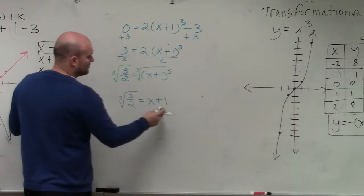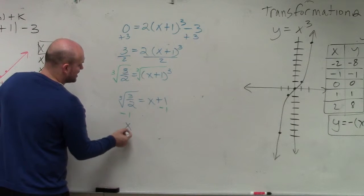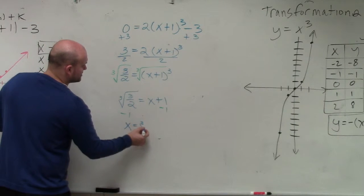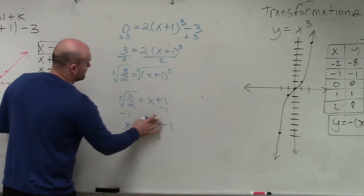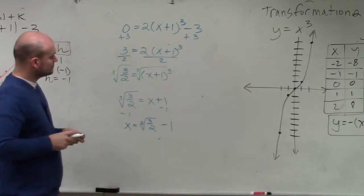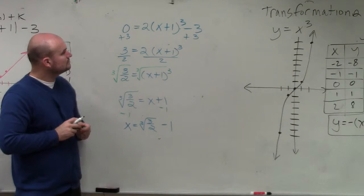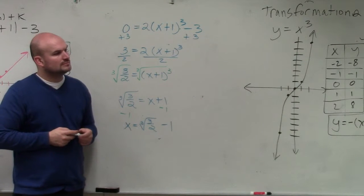Then I just got to get rid of the 1. So my solution is x equals the cube root of 3 halves minus 1. OK?